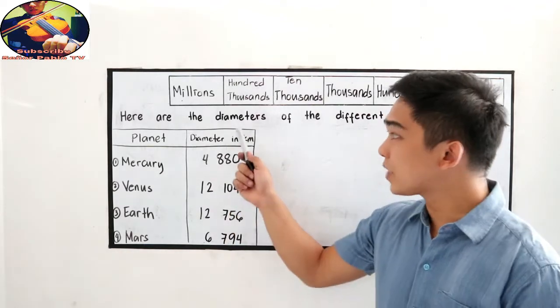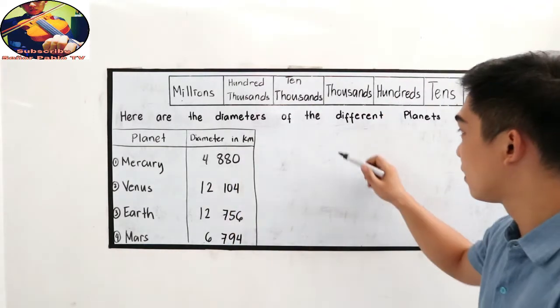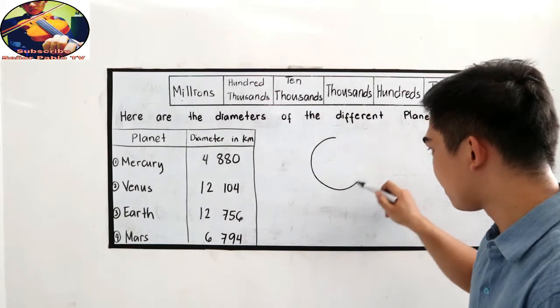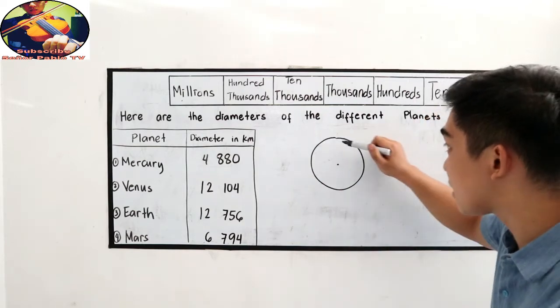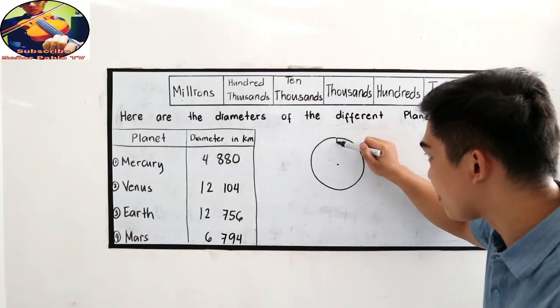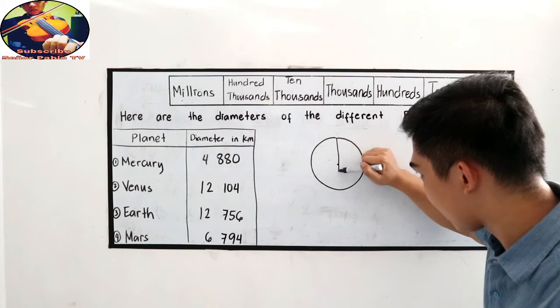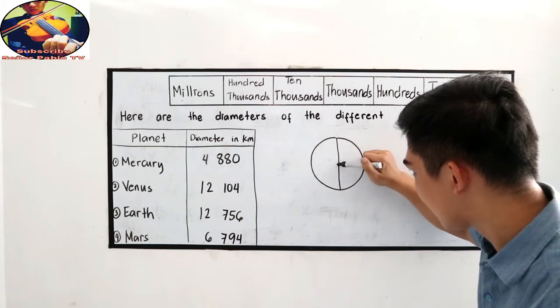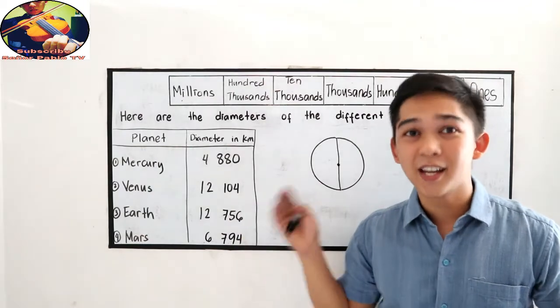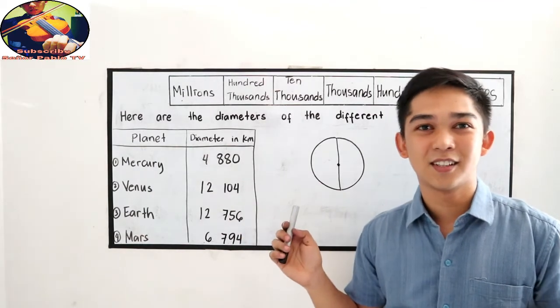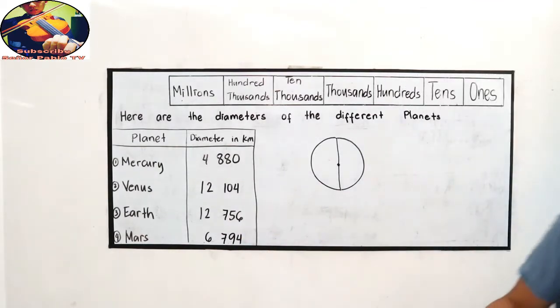When we say diameter, if we have a circle and the center, the diameter is a line that passes through the center of our circle. The diameter is also the largest chord in a circle.